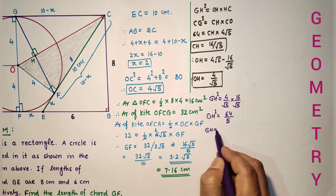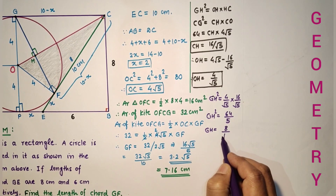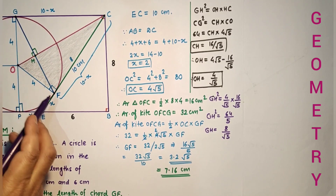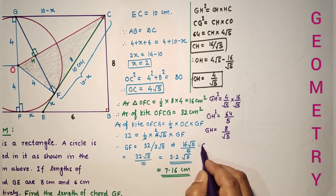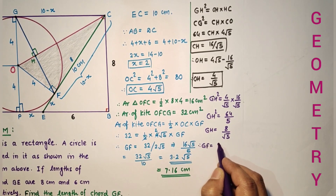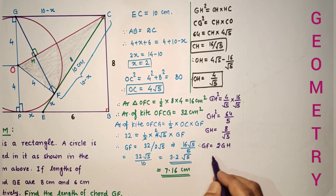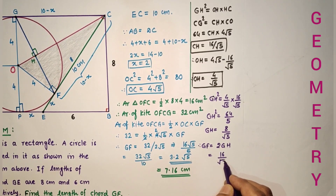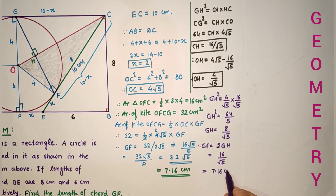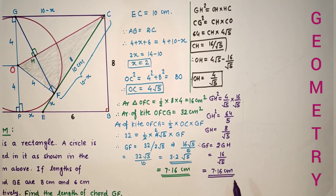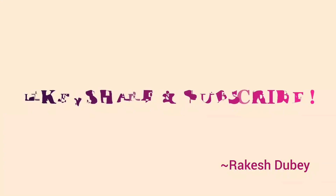Therefore GH equals 8 by √5. Since GH equals HF (the chord is bisected), GF equals 2 times GH equals 16 by √5, which simplifies to approximately 7.16 cm. Both methods confirm GF is approximately 7.16 cm.